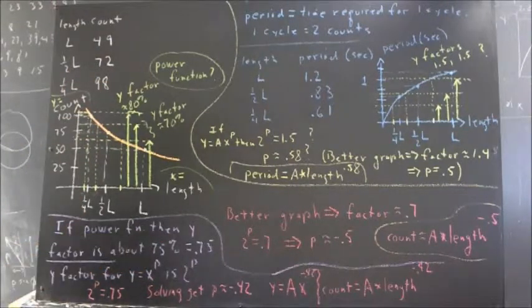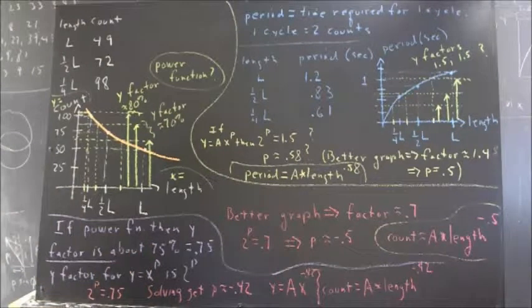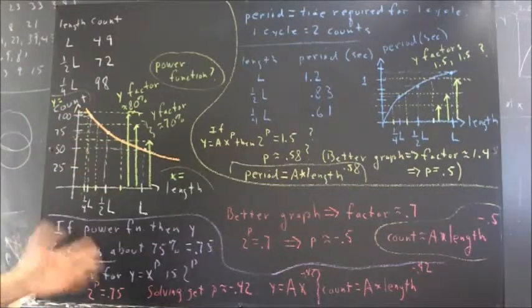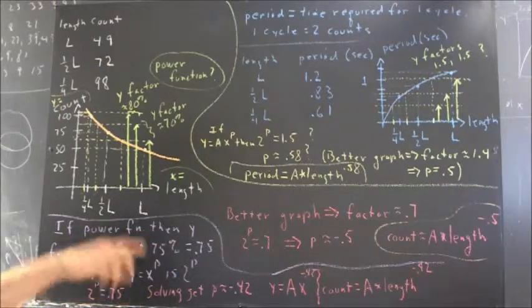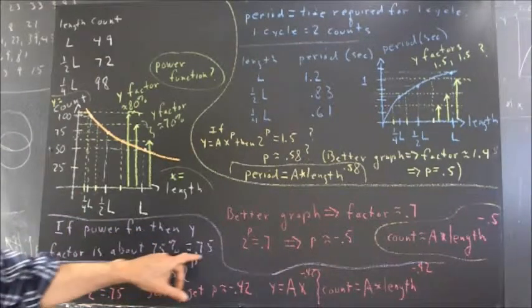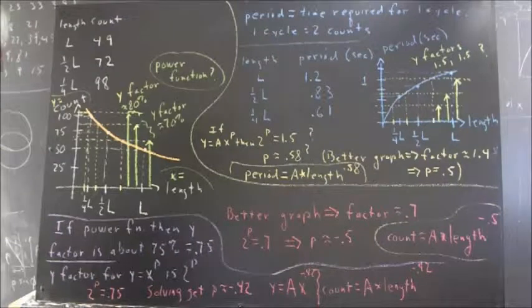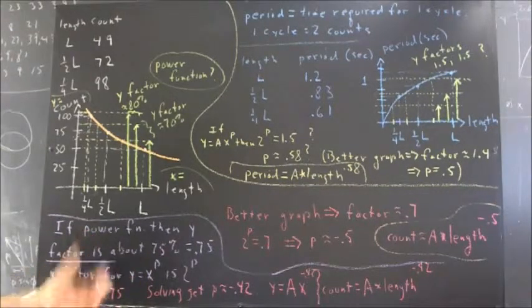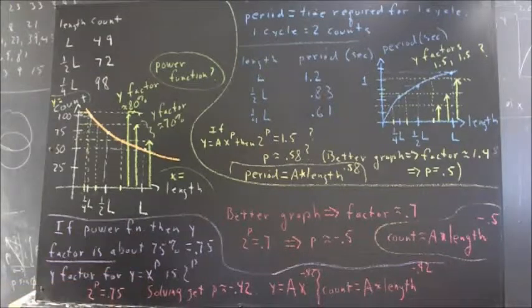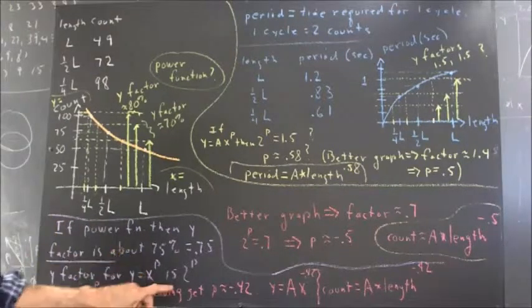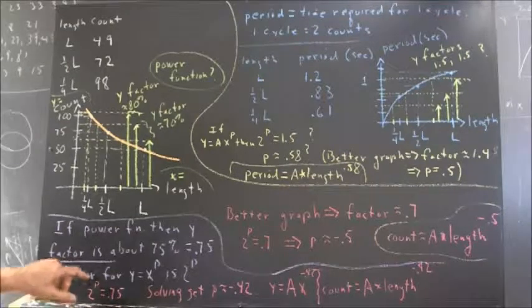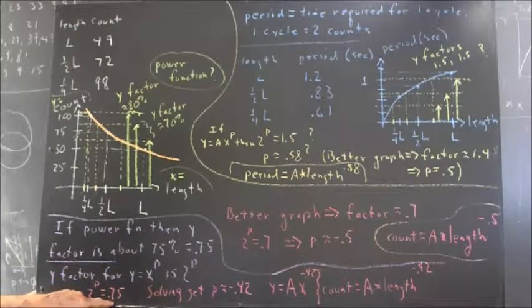If we do have a power function, if we do have a power function model that works for pendulum count versus length, then according to our graph, our best guess would be that our y factor when we double x is about 75% or 0.75. Well, we know that the y factor for power function y equals x to the p, when we double x, the factor is going to be 2 to the p.